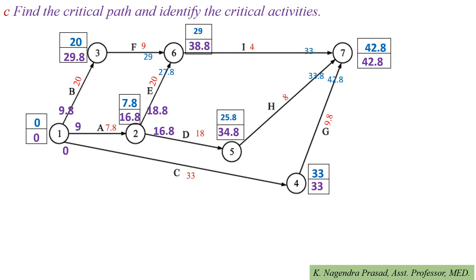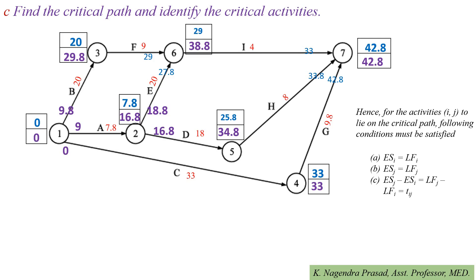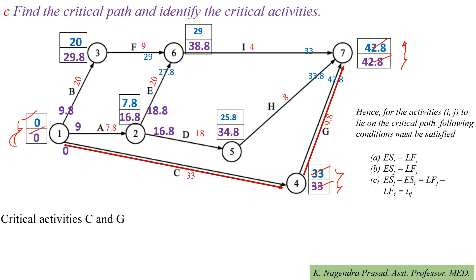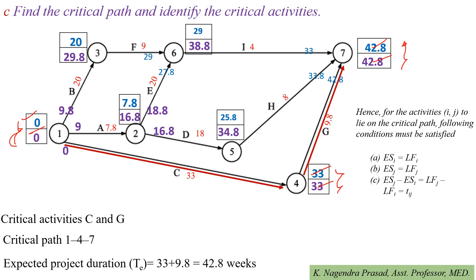Next, we find the critical path and identify the critical activities. For critical activities lying on the critical path, the earliest event time equals the latest event time. Here, for activities C and G, the earliest event time equals the latest event time. Therefore, activities C and G are the critical activities. The critical path is 1→4→7, and the expected project duration is 33 + 9.8 = 42.8 weeks.